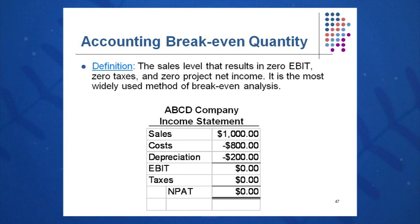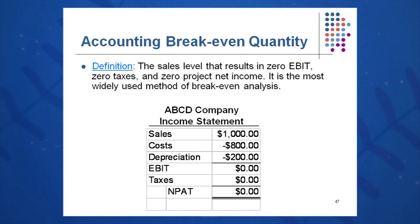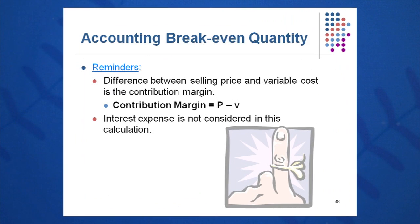Here's a sample income statement for ABCD company. Sales are $1,000, costs are $800, depreciation is $200, with zero EBIT, zero taxes, and zero NPAT — this is accounting breakeven. Accounting breakeven quantity is the quantity, or sales level, that results in zero EBIT, zero tax, and zero NPAT. It answers: how many widgets do I need to make and sell just to break even? A reminder: contribution margin is P minus V — it's in the denominator of all these equations, and interest expense is not included.